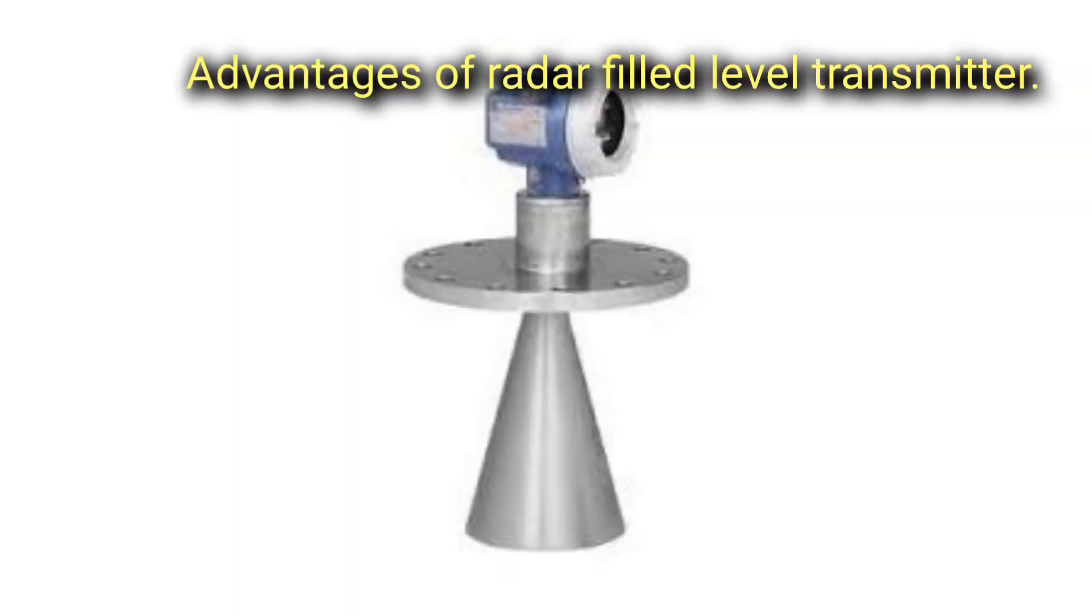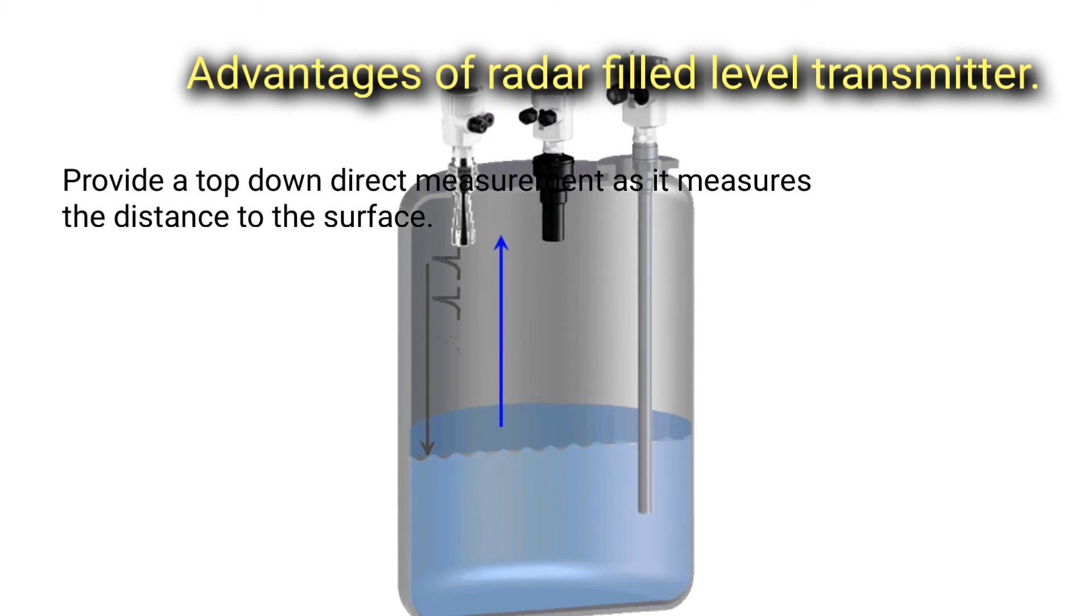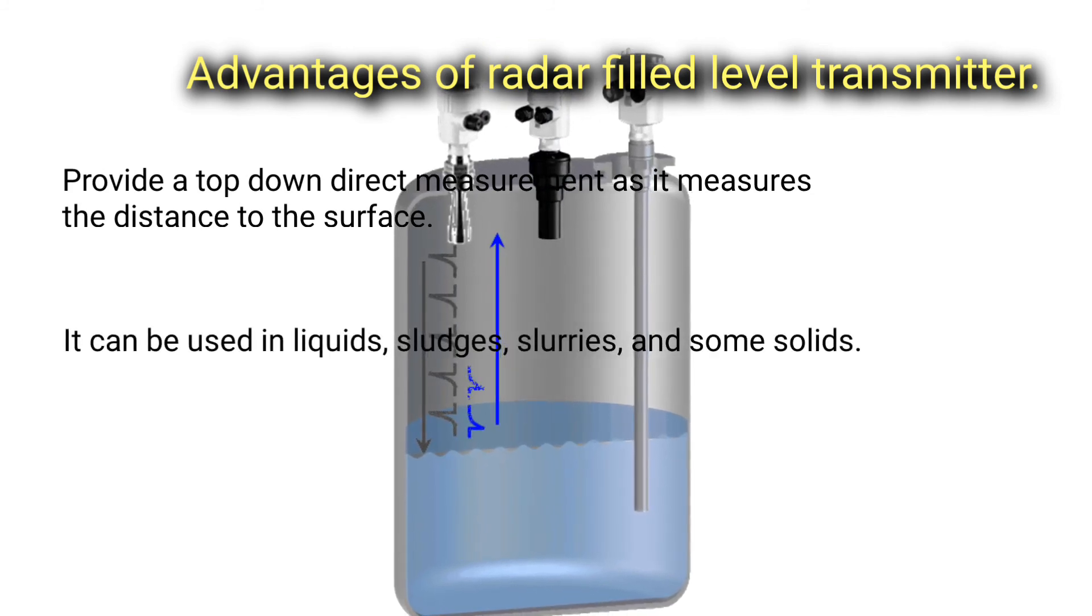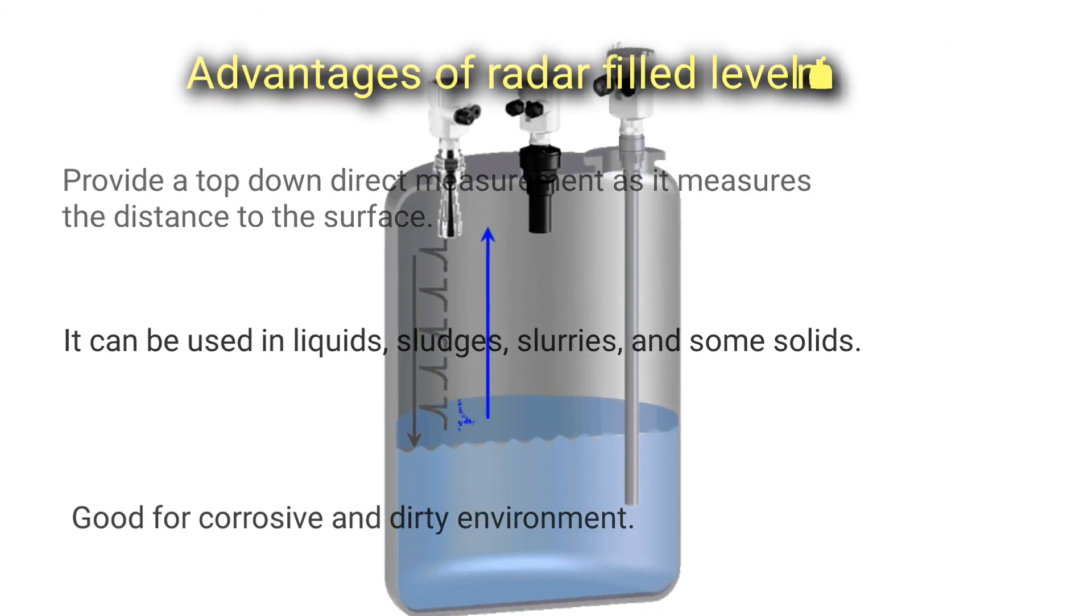Advantages of radar fill level transmitter: Provides a top-down direct measurement as it measures the distance to the surface. It can be used in liquids, sludges, slurries, and some solids. Good for corrosive and dirty environments.